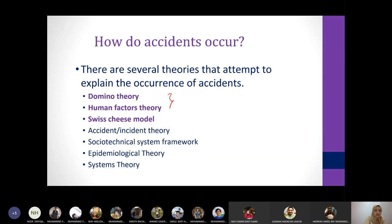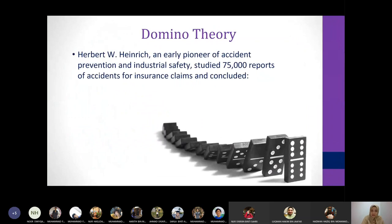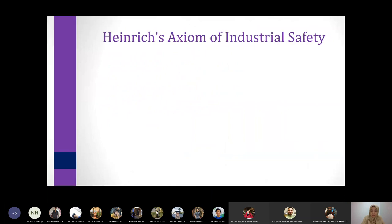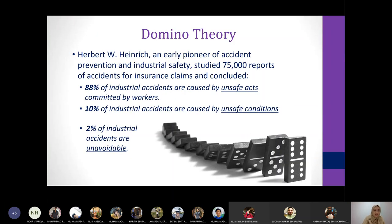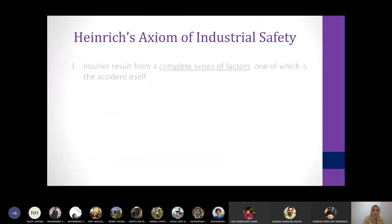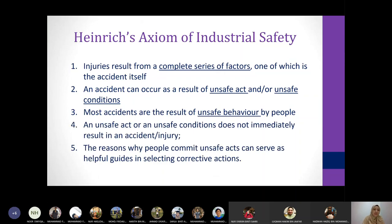We covered domino theory on Monday. To recap, the domino theory says the causation of an accident is due to a chain of factors. Based on Heinrich's study, he said that 98 percent of accidents are avoidable because they are caused by unsafe acts and unsafe conditions. This goes back to human action — almost all accidents are due to human intervention. Heinrich also proposed the ten axioms of industrial safety.